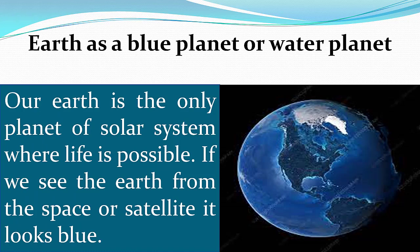Now we will discuss why Earth is called the blue planet or water planet. Earth is the only planet of the solar system where life is possible. If we see the Earth from space or satellite it looks blue. Why does Earth look blue?